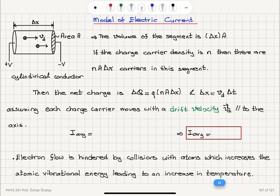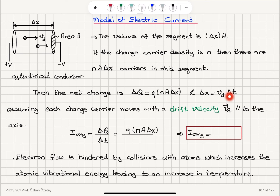The average current that flows through this electrical conductor is the charge that flows through it per unit time — delta Q per unit time delta t. The charge that flows is the charge of each carrier Q, multiplied with the total number of charges, which is charge density N multiplied with the volume, area A, delta x, divided by delta t. Now if all of the charges are moving with an average velocity Vd, then Vd is delta x divided by delta t.